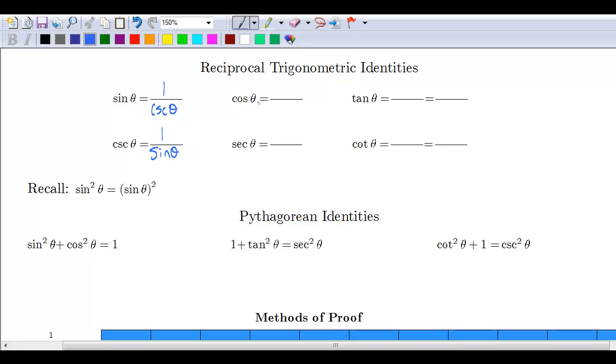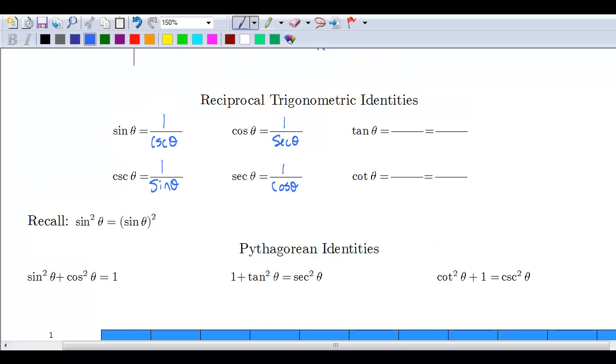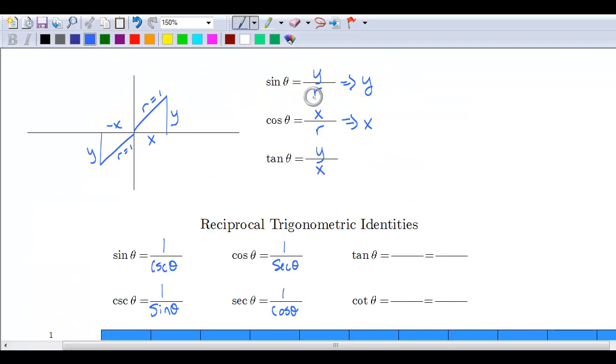Cosine is the reciprocal of secant, so secant is the reciprocal of cosine. Reciprocal does not mean inverse; these are just talking about flipping those ratios over. These were ratios x over r, y over r—this is just saying flip those ratios over.